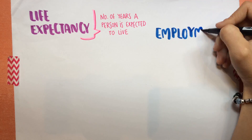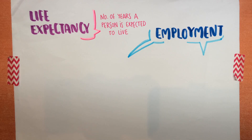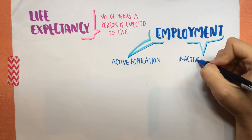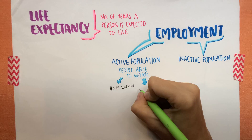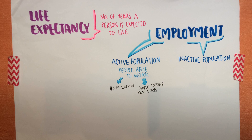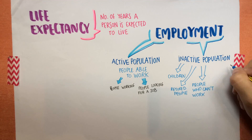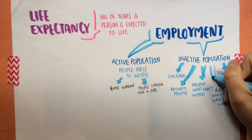According to employment we can talk about active population and inactive population. Active population includes all adults who are able to work. This can be employed people who work or unemployed people who look for a job. Inactive population includes different groups, for example children, retired people, people who can't work, students, or people who don't want to work.